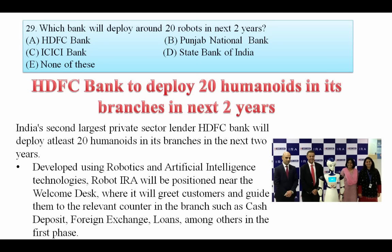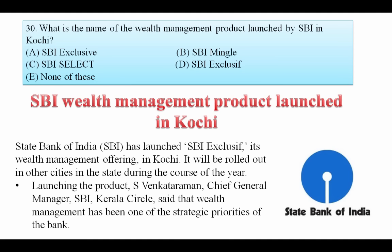Which bank will deploy around 20 robots in the next two years? India's second largest private sector lender HDFC Bank will deploy at least 20 humanoid robots in its branches in the next two years, which will help with services like cash deposit, foreign exchange guidance, and loans, among others in the first phase. Your answer is HDFC Bank.